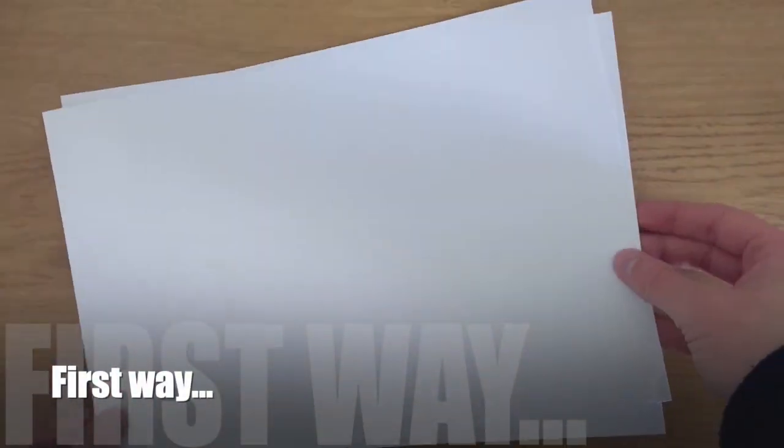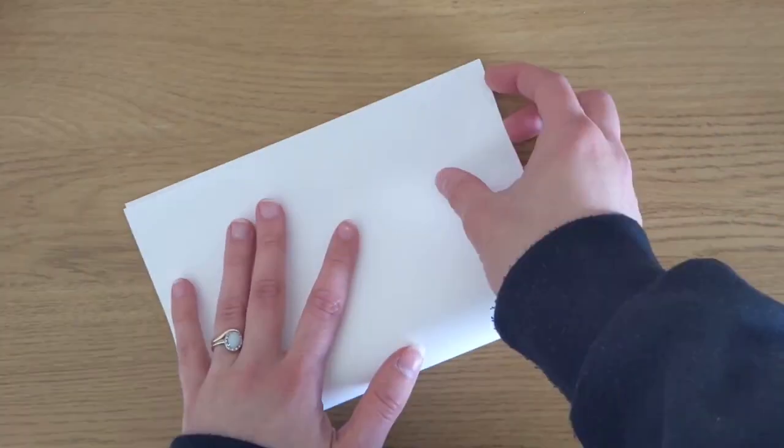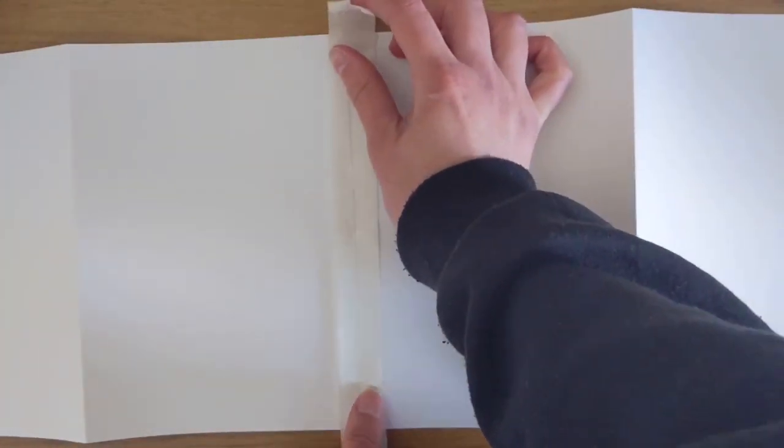There's two ways you can do it. First with two sheets of A4 paper. Fold both of them in half so you have four sections which you can tape together either with masking tape or any type of tape you've got in the house.